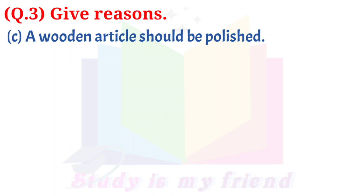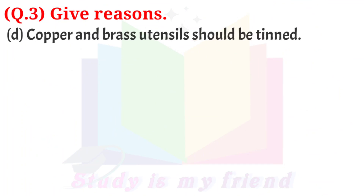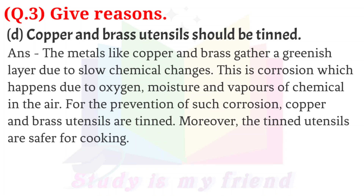C. A wooden article should be polished. Answer: Wood is an organic substance that is affected by termites or fungus. This natural change can result in irreversible damage. If polish is applied to wooden articles, the rate of natural changes slows down. Thus, to prevent this harmful change, a wooden article should be polished. D. Copper and brass utensils should be tinned. Answer: Copper and brass gather a greenish layer due to slow chemical change. This is corrosion, which happens due to oxygen, moisture, and vapors of chemicals in the air. For prevention, copper and brass utensils are tinned. Moreover, tinned utensils are safe for cooking.